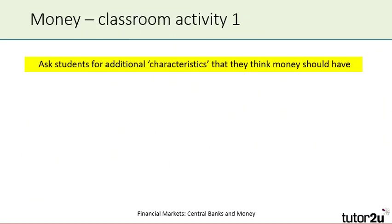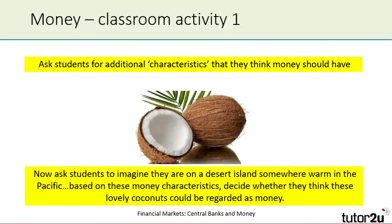Here's a classroom activity idea. Ask students for additional characteristics they think money should have — for example durable and portable, but also easily divisible, non-perishable, or having national significance. Then put up a picture of coconuts and ask students to imagine they're on a desert island in the Pacific. Based on the characteristics they identified, could those coconuts be regarded as money? It's a fun starting point, and a great way to end the activity is to talk about other things used as money in different societies: rice, sugar, shark teeth, conch shells, and indeed coconuts.